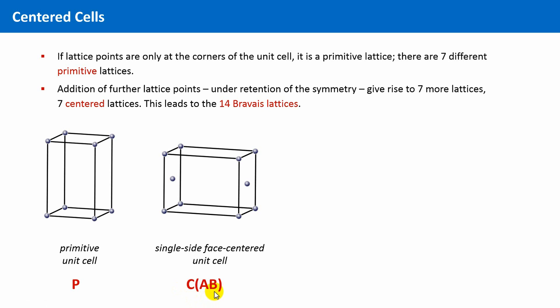The next variant is the body centering, in which an additional lattice point is placed exactly in the center of a unit cell, and the symbol for this kind of centering is I, derived from inside.